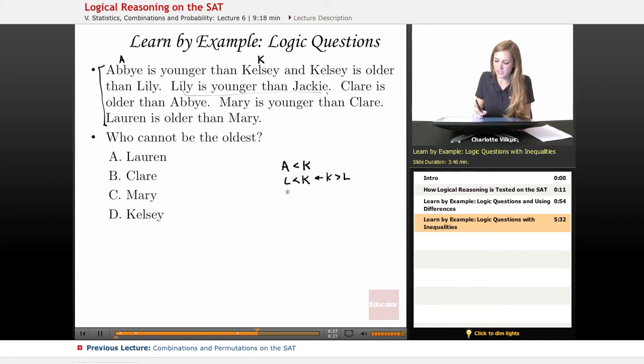Lily's also younger than Jackie, so L less than J. Claire is older than Abby, so I'm going to have to reformat that one again so that I get Abby is younger than Claire if Claire is older than her. I also have Mary is younger than Claire, so M less than C.